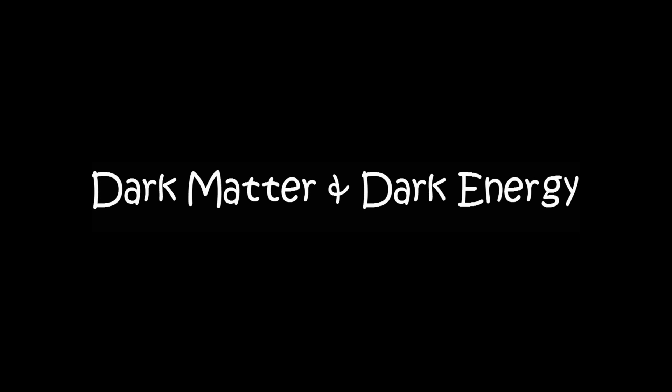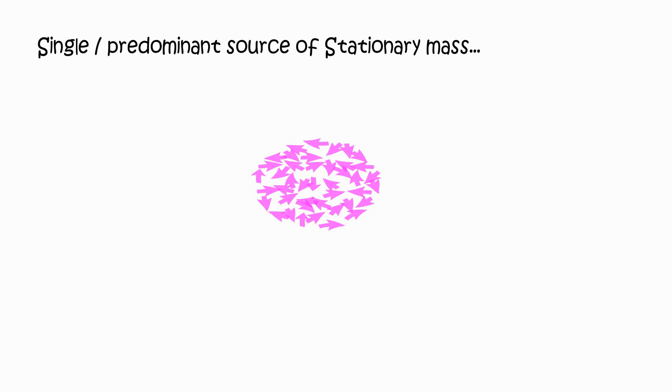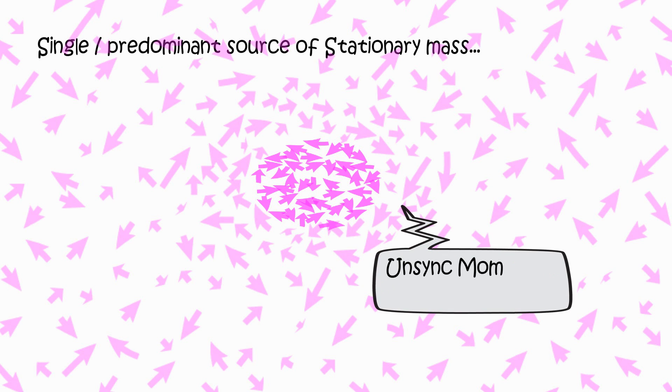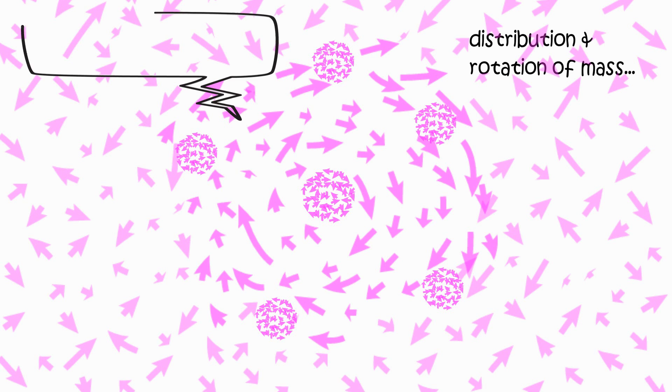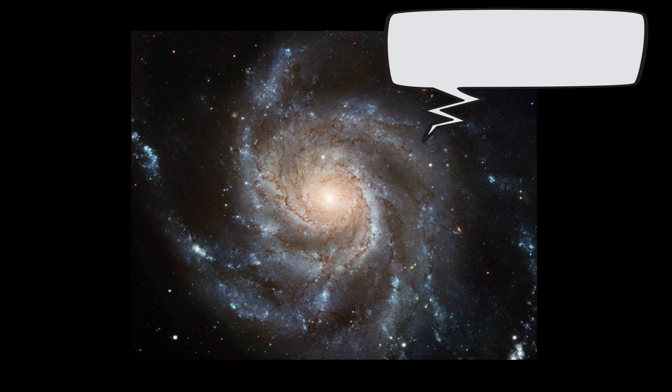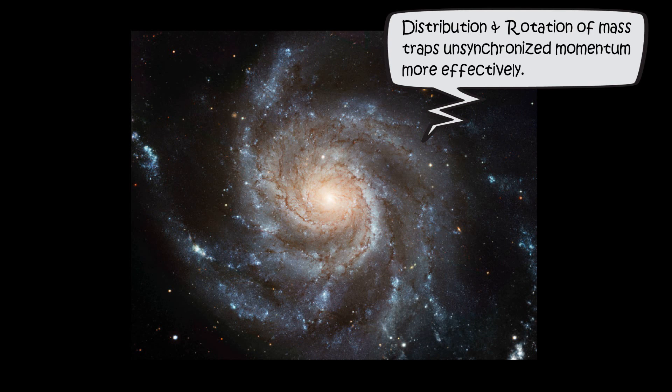Dark matter. Distribution and rotation of mass traps unsynchronized momentum more effectively, generating the effects of dark matter. The galaxy's mass distribution and rotation is more effective in trapping space, causing space to gain slightly conserving trajectories, position stability against outside of the galaxy, thus mass.